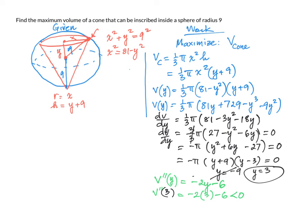When it's less than 0, the function is concave down. And when it's concave down, y equals 3 is a maximum value.